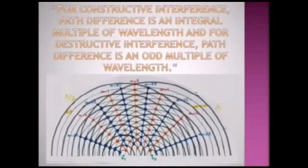I have drawn this sketch for showing the constructive and destructive interference at different points from two coherent sources. For constructive interference, path difference is an integral multiple of wavelength. For destructive interference, path difference is an odd multiple of wavelength.